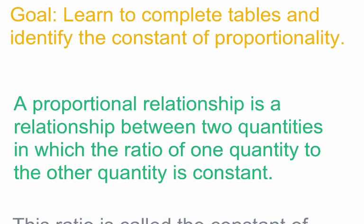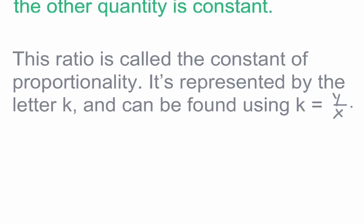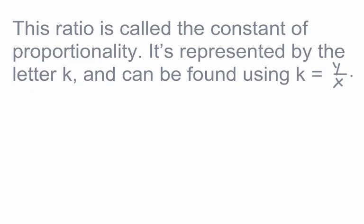This ratio has a specific name: the constant of proportionality. It's represented by the letter K, and can be found using the equation K = Y over X. In this lesson, we're going to be finding the constant of proportionality from tables, and then using it to write an equation.